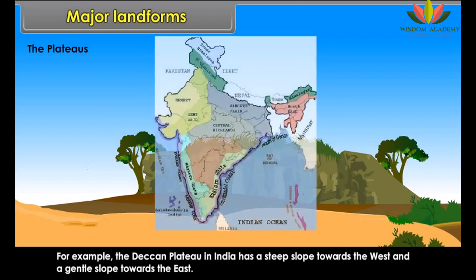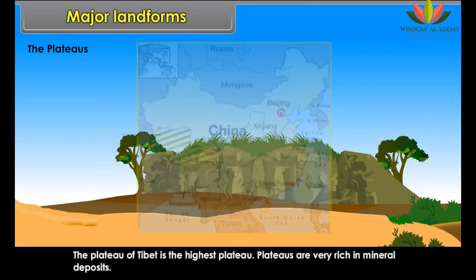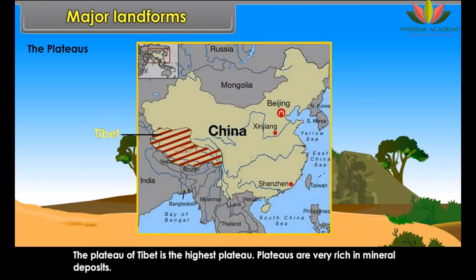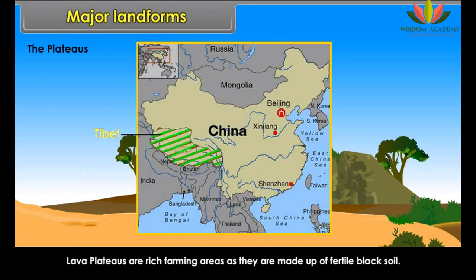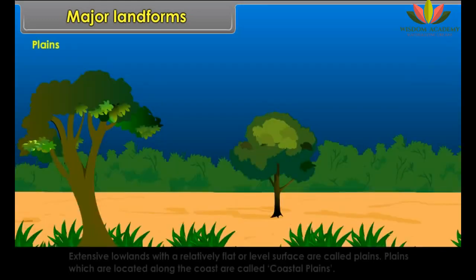An extensive area of high elevation rising steeply from the surrounding lowland is a plateau. Some plateaus have a steep slope on one side only and gentler slopes on other sides. For example, the Deccan Plateau in India has a steep slope towards the west and a gentle slope towards the east.